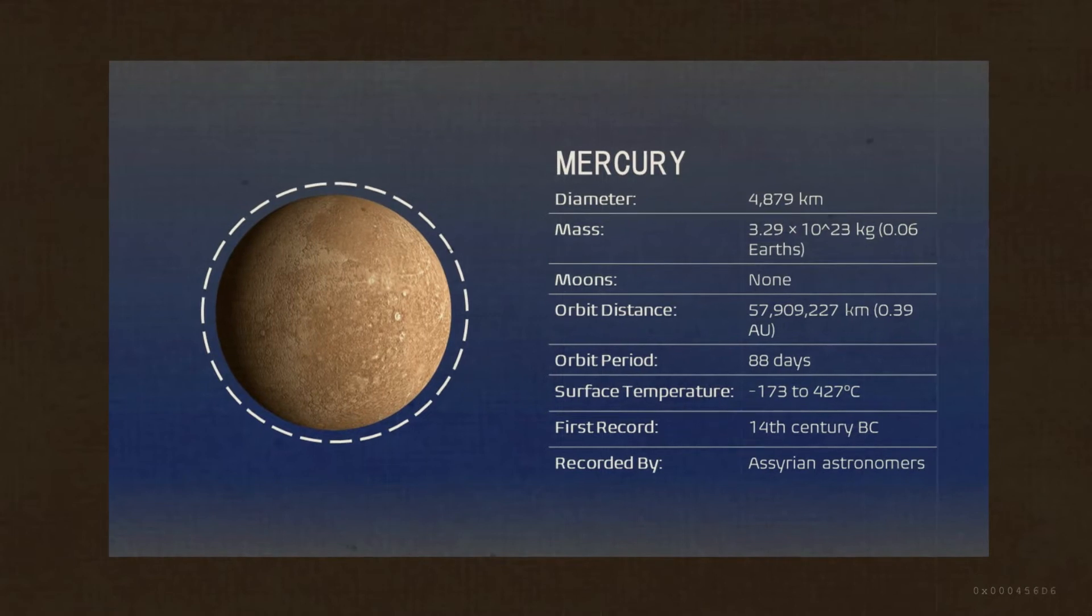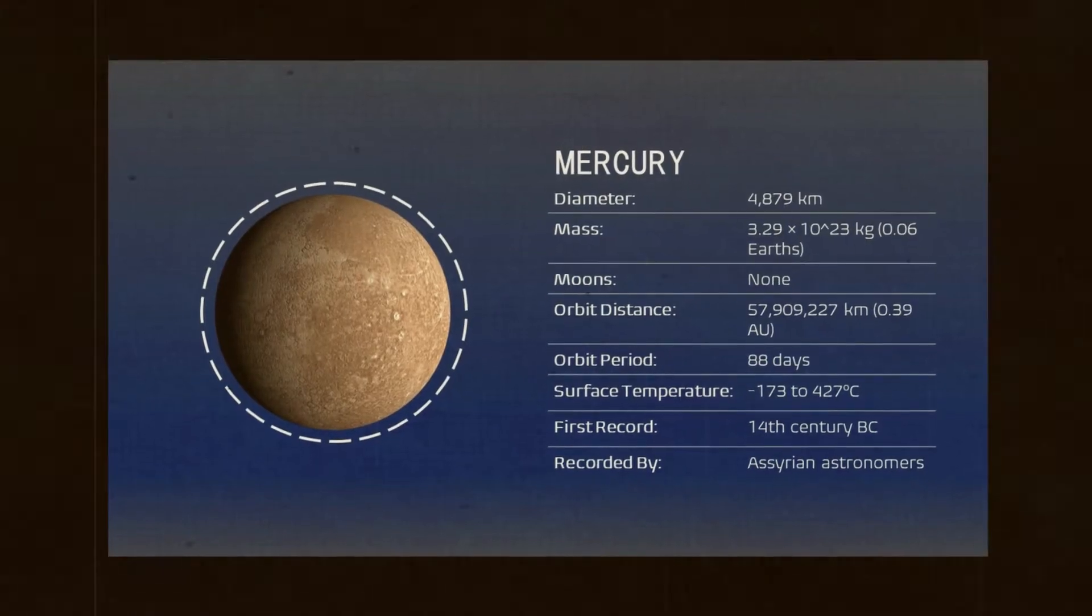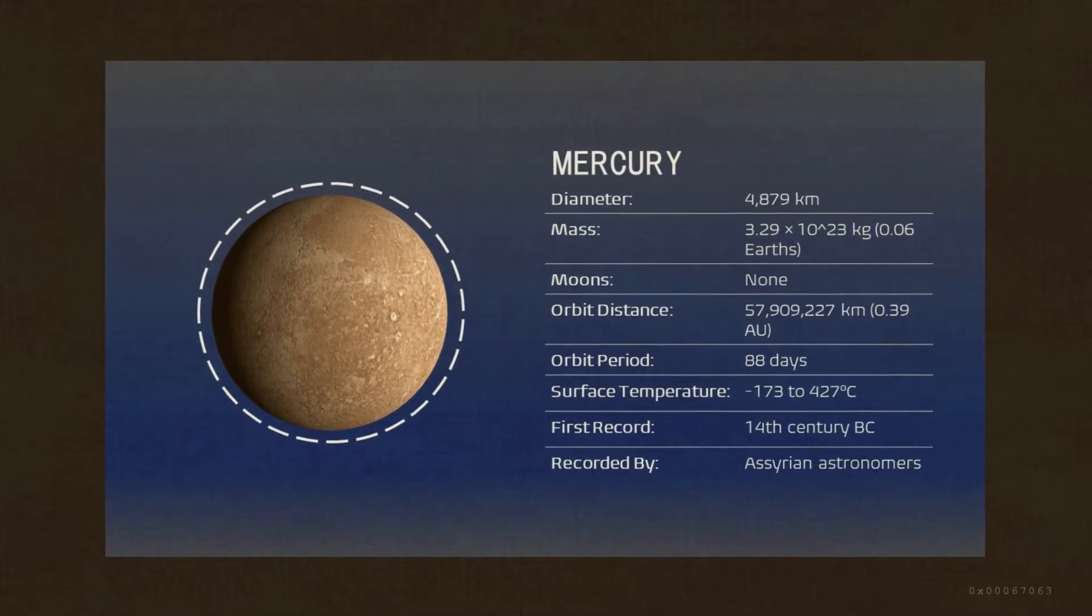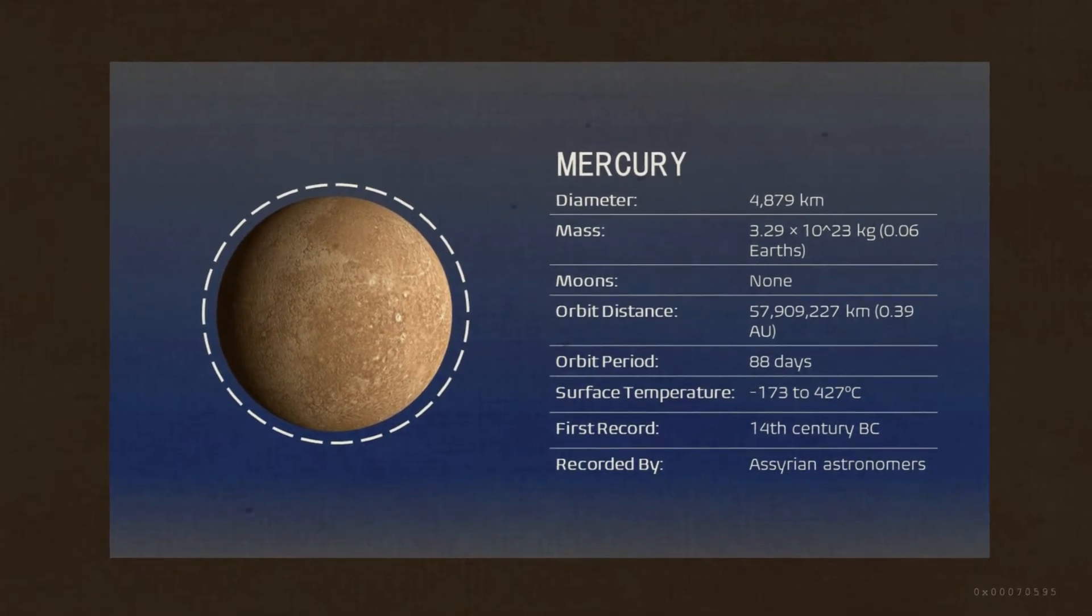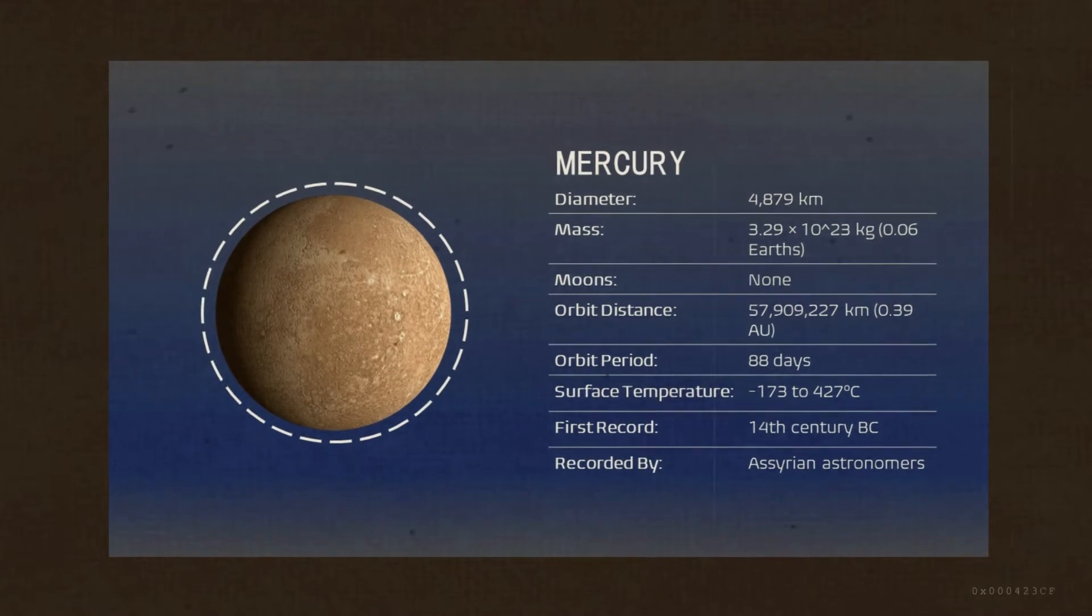Mercury is the smallest planet in our solar system. It is the closest planet to the Sun. Mercury only takes 88 days to orbit around the Sun, getting its name from the swift Roman god of shopkeepers, merchants, and medicine.